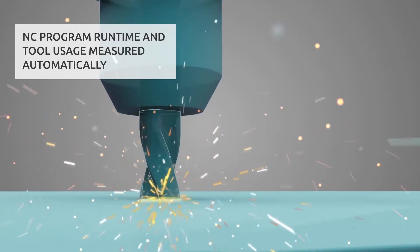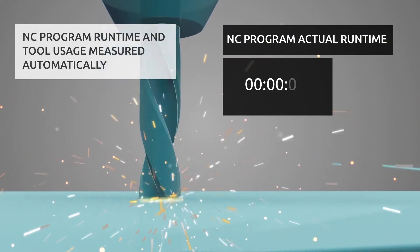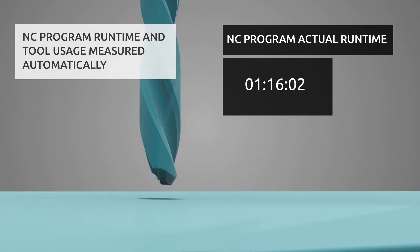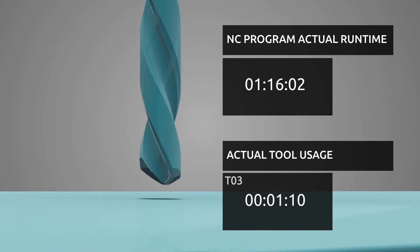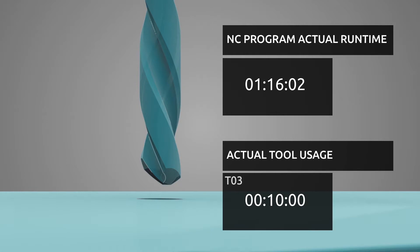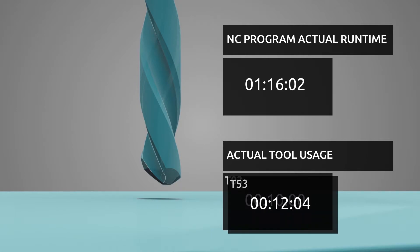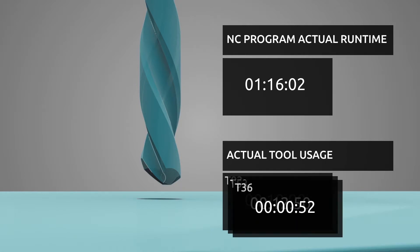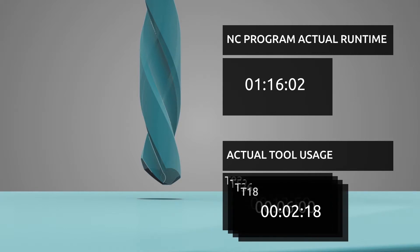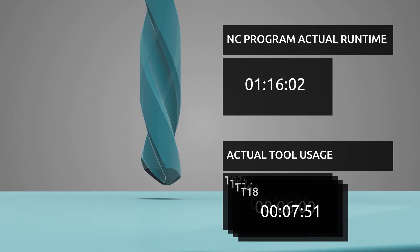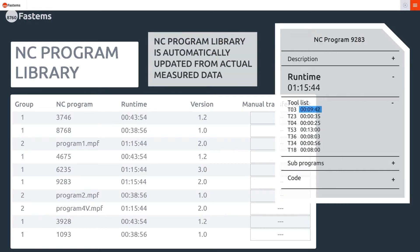As the machine runs an NC program, the system measures actual run times for each run and saves them to MMS. Additionally, it automatically measures usage for each tool in the program and stores the data in the MMS NC Library application.